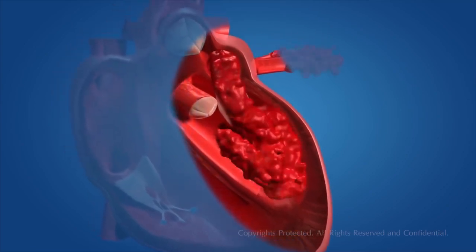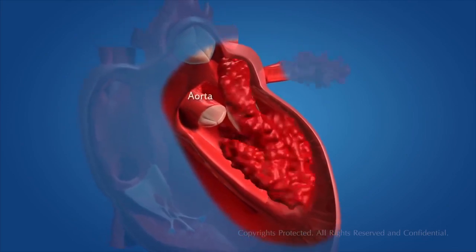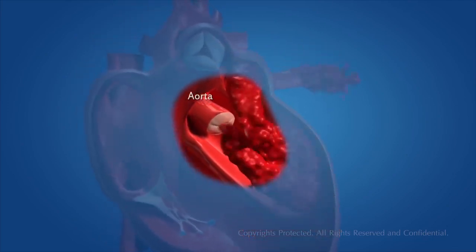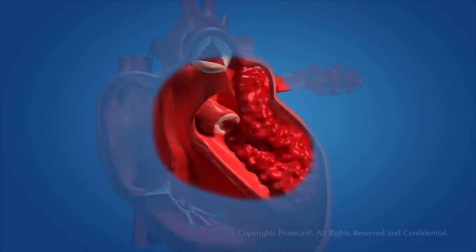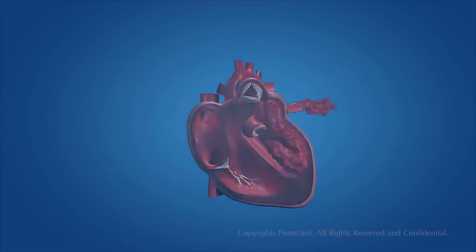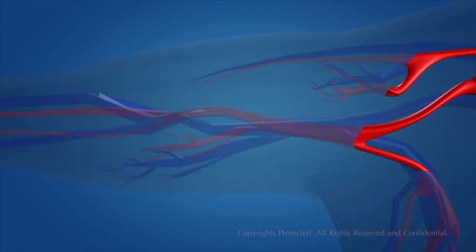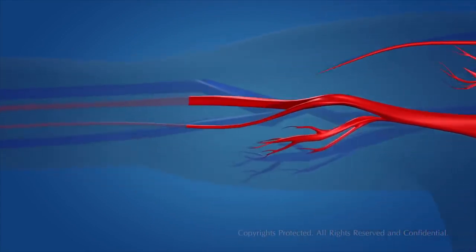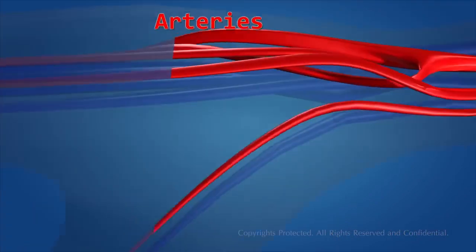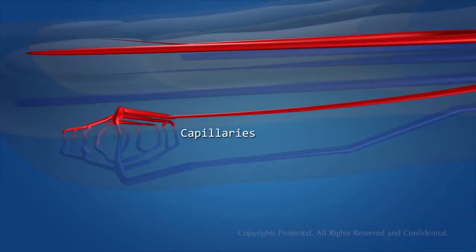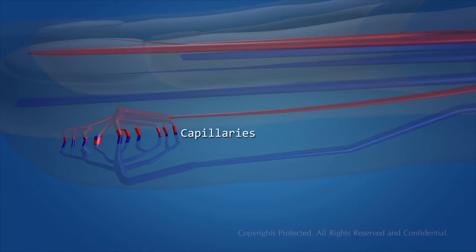When the left ventricle contracts, the blood is pumped into the aorta, which carries oxygenated blood to the different parts of the body, except the lungs. Oxygenated blood reaches the different parts of the body through the blood vessels called arteries. The arteries get branched into capillaries, which then reach the different organs of the body.